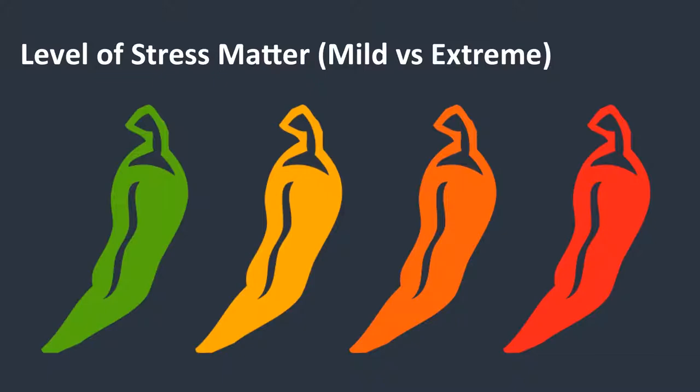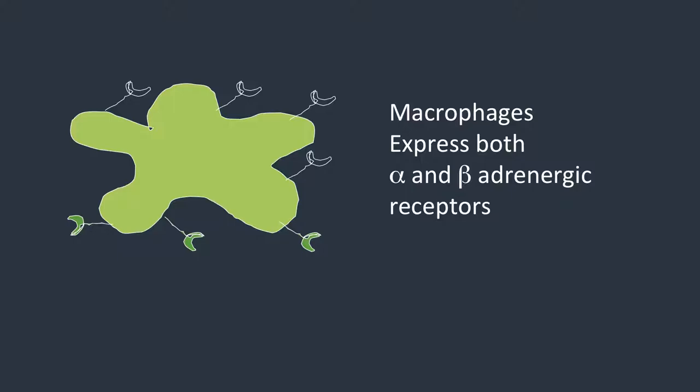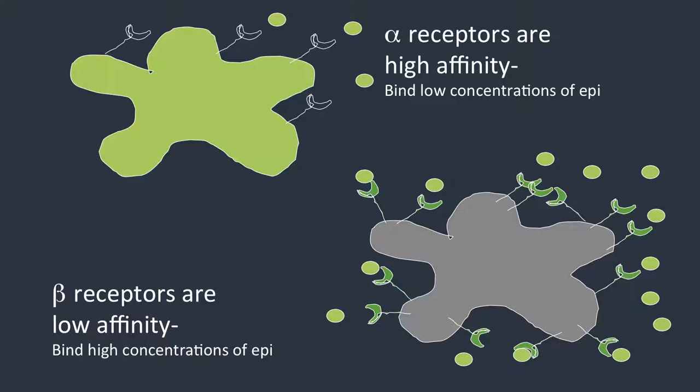The level of stress matters — whether we're talking about mild or extreme. Let me give you an example of how that works. Macrophages express both alpha and beta adrenergic receptors, and the alpha and beta adrenergic receptors are going to bind to epinephrine.